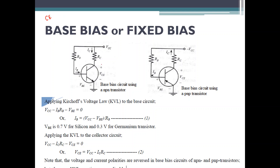Most of the times, the transistor will be working in the common emitter configuration. One of the ways to turn on a transistor is called base bias or fixed bias. The circuit diagram for a base bias or fixed bias is shown here. You can see a transistor with the emitter made common — that is why we call it common emitter configuration. To the collector terminal, a resistor RC is connected, and to the base terminal, a resistor RB is connected.